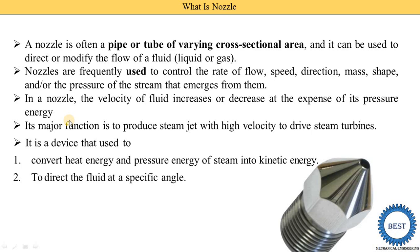Second, to direct the fluid at specific angles. We need to supply the steam at a particular angle — it may be 10 degrees, 15 degrees, or 12.5 degrees. As seen in the image, nozzles are fitted at certain angles. We may install the nozzle horizontally, vertically, or at 45, 30, or 12.5 degrees — whatever angle is required.